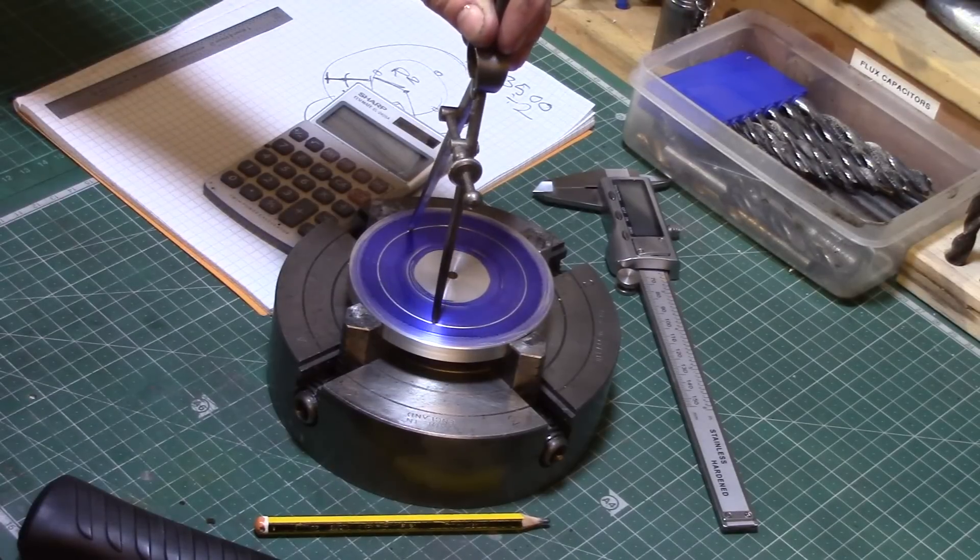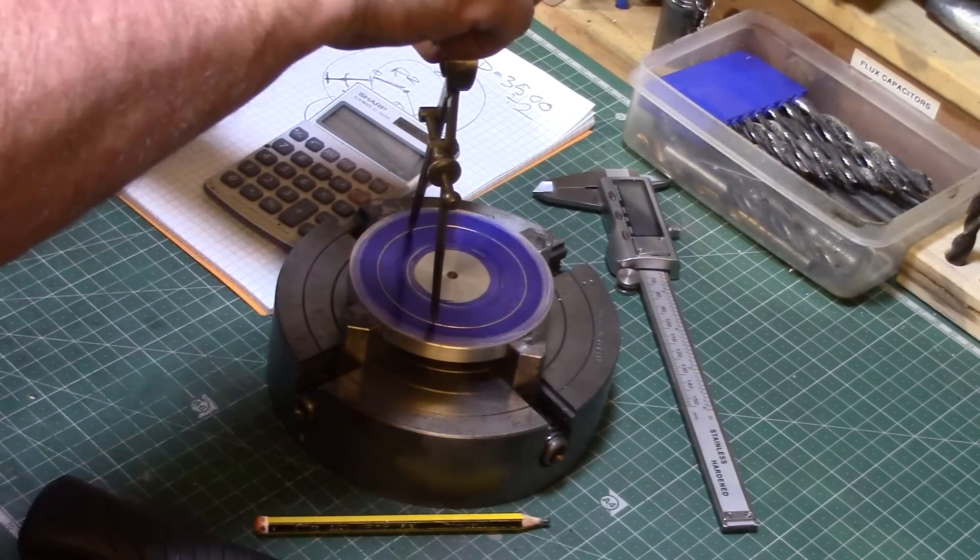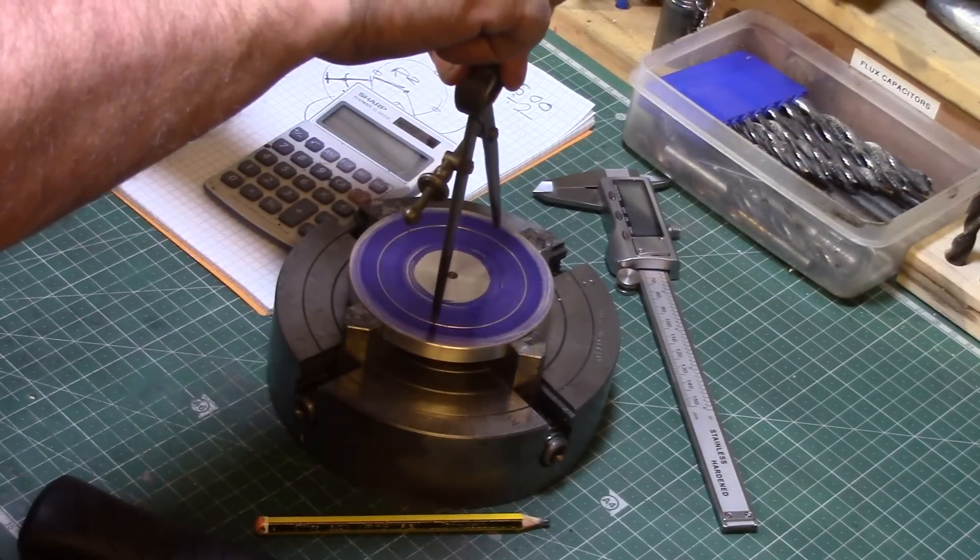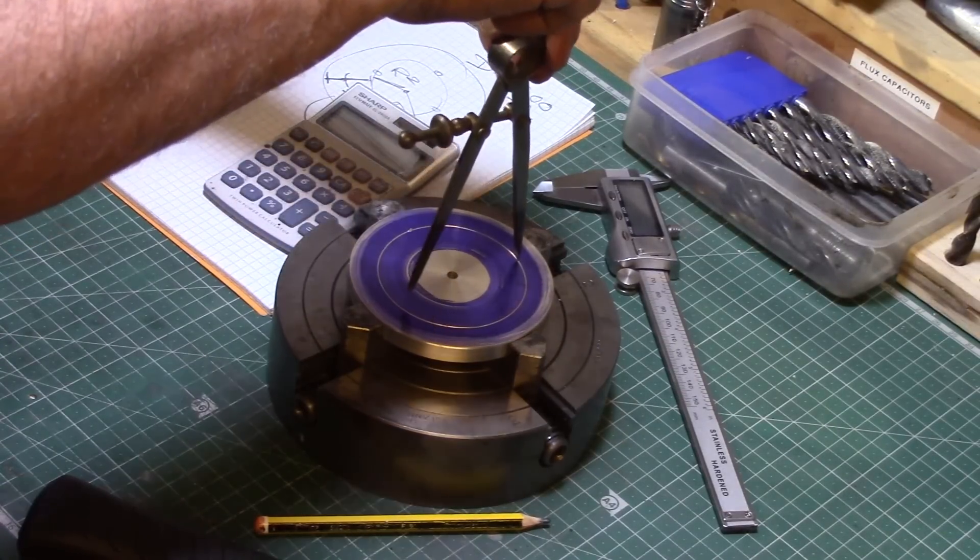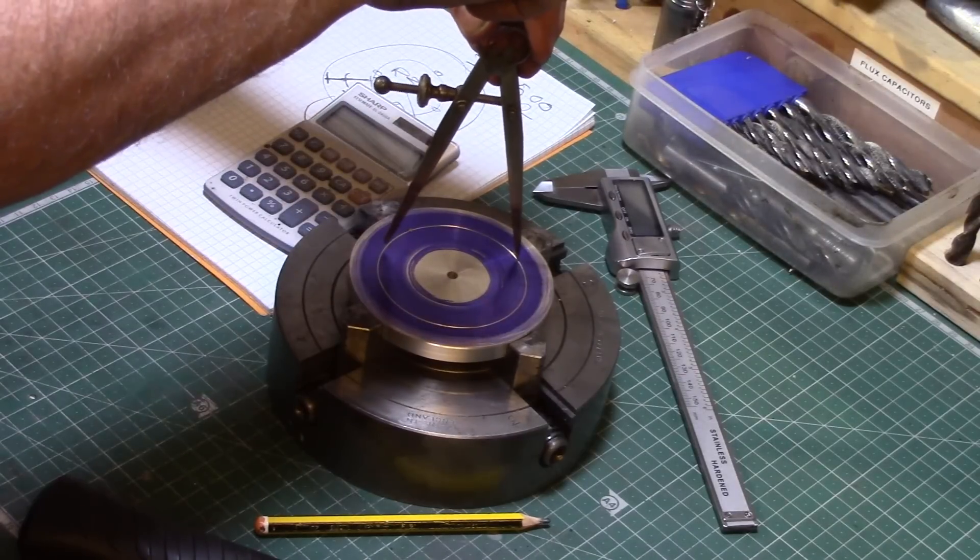Then, using your reference punch mark as a pivot point, locate the other leg of the dividers into the turned groove of the PCD and walk the compasses around and back to the reference point.